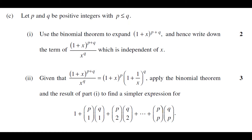Hi everyone. In this video I'm continuing to work through question 6 part C of the HSC Extension 1 exam from 2008. I've already worked through part 1 in a prior video, so have a look at that if you haven't already. In this video I'm going to focus on part 2, which asks us: given that (1+x)^(p+q) / x^q equals (1+x)^p times (1+1/x)^q, apply the binomial theorem and the result of part 1 to find a simpler expression.